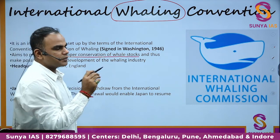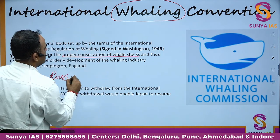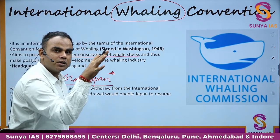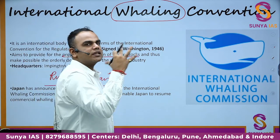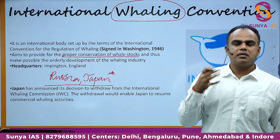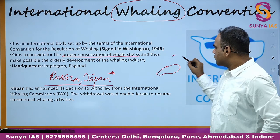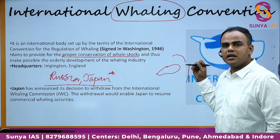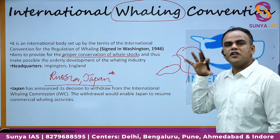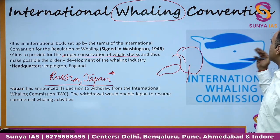The International Whaling Convention talks about proper conservation of whale stocks. India is a member. Recently, Russia and Japan have come out of the International Whaling Commission. When they are out, they can proceed with commercial whaling. Japan, given its natural disaster risks and its location near converging hot and cold ocean currents, relies on fishing as a sustainable food source.